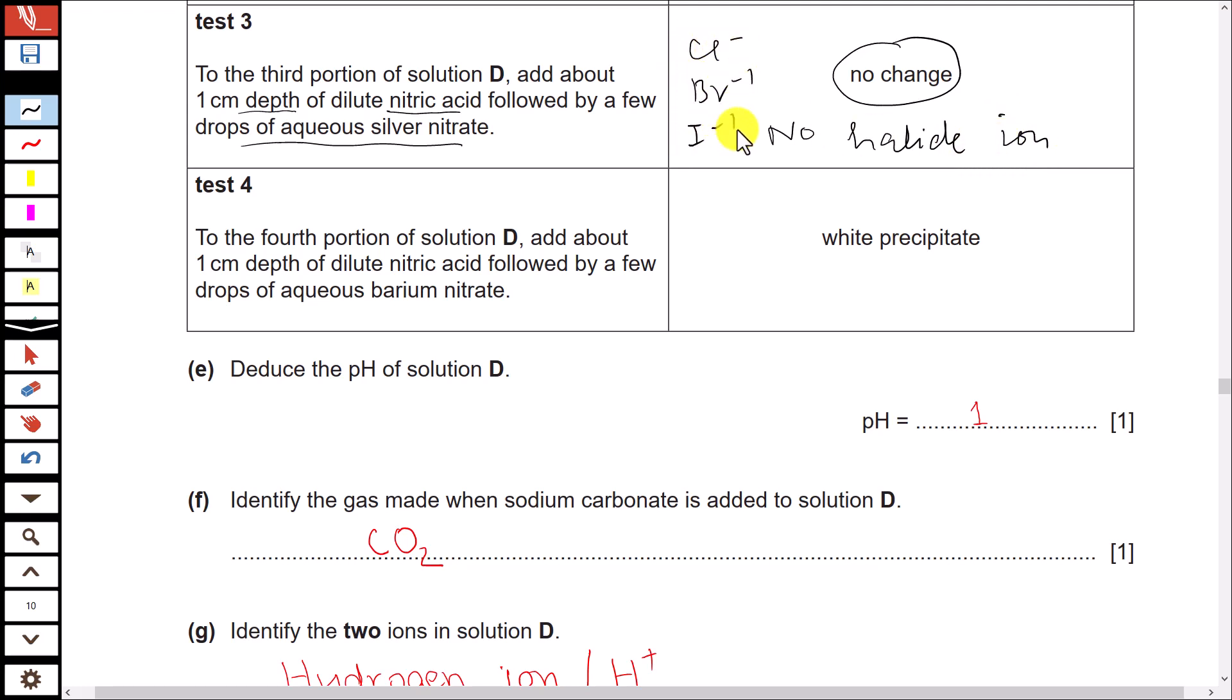The next test is Test 4: To the fourth portion of solution D, add about one centimeter depth of dilute nitric acid followed by a few drops of aqueous barium nitrate. This is a test used to detect the presence of sulfate ion.